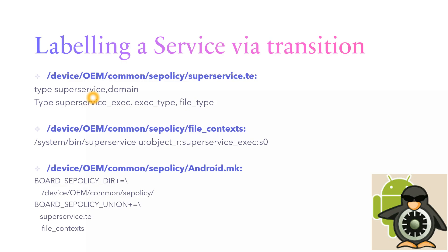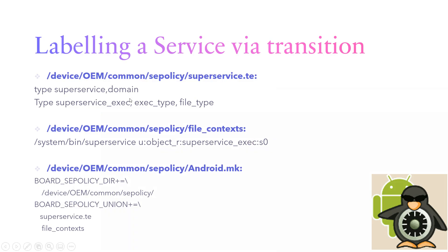If you don't have the super_service_exec privileges, you will not be able to access this super_service. I've defined the super_service.te file and the file_contexts file, specifying the context as super_service_exec — this is the context under which the super_service will run. Both of these files need to be added in the android.mk file, which is present under the same directory: device/oem/common/se_policy, under board_se_policy and se_policy_union directories.